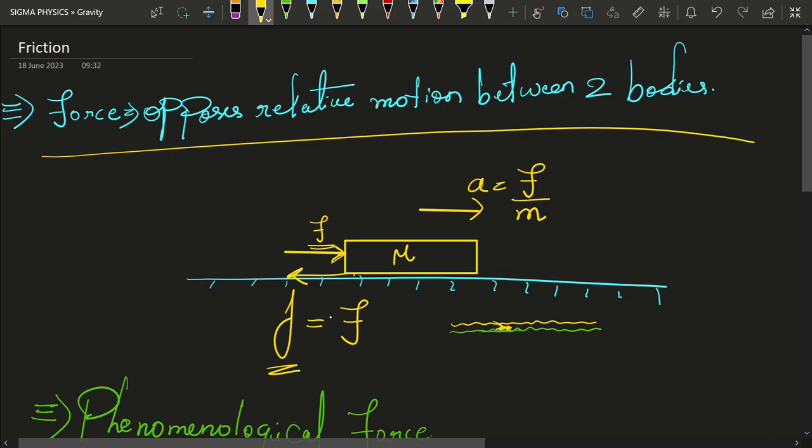Friction is a force which opposes the relative motion between two bodies. Whether it is at rest or it is moving, the friction is going to oppose the relative motion. Which means if you are in the frame of reference of this floor, then the book kept on the floor will, if you push it with a force F, it will try to move in this direction. But, due to friction, it does not move. Friction doesn't allow it to move in that direction.